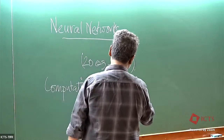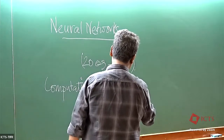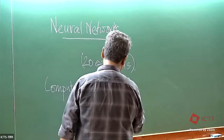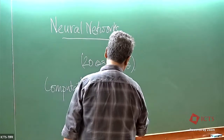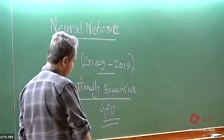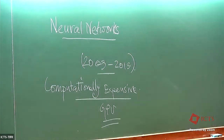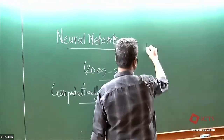But now with GPUs, high-performance computing, and the dropping price of computing, we are again looking at neural networks in a big way — and this time it's uncontrollable. So what is a neural network? Neural networks are inspired by biology.